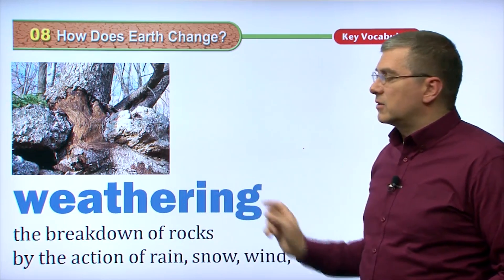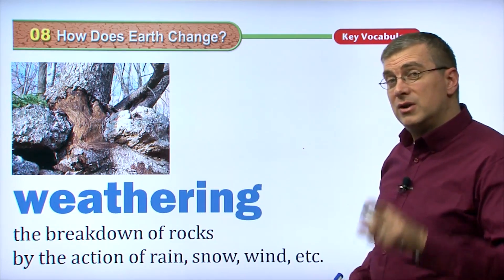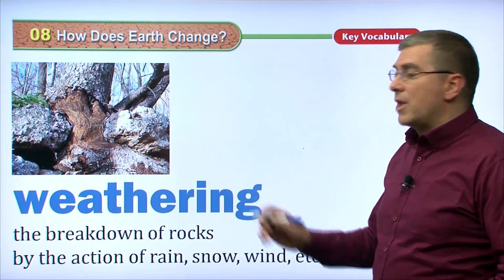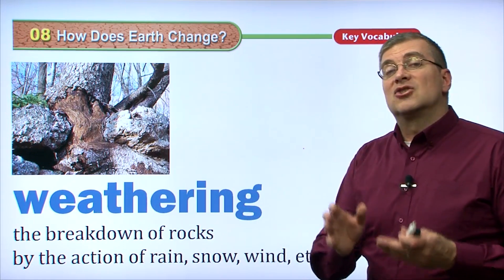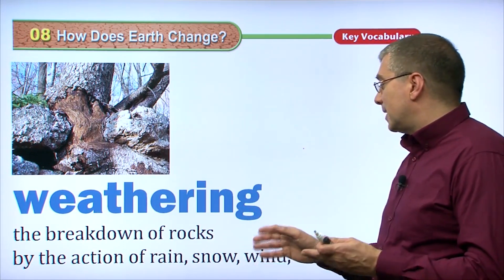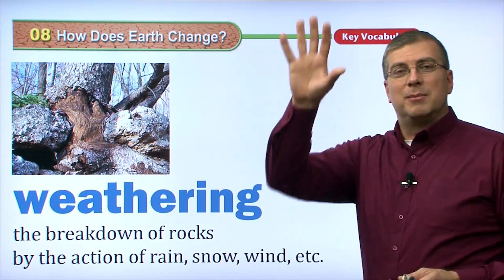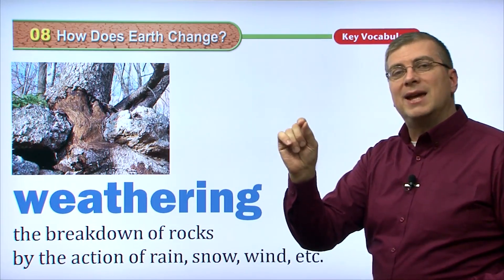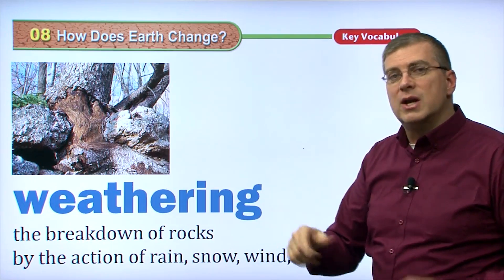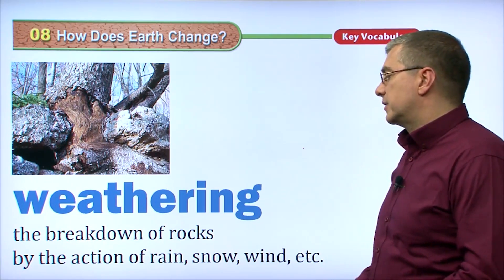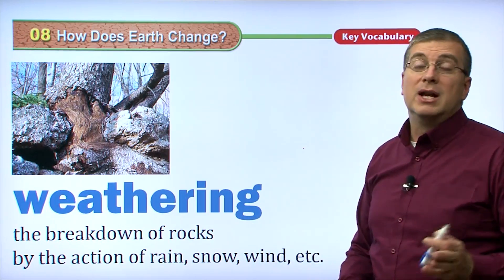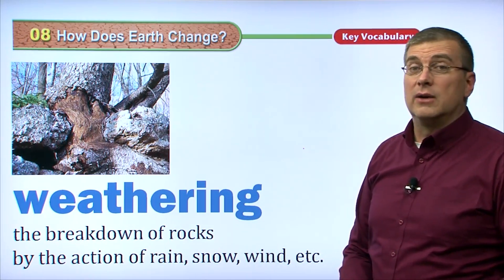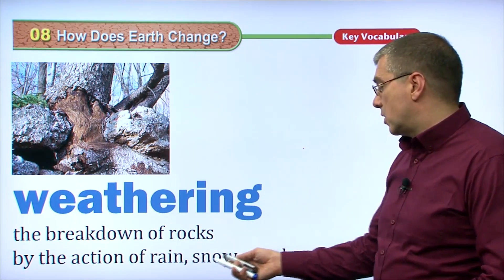By the way, weathering is also a common word used to describe what the weather does to your house. So if you talk about the weathering on your house, you're also talking about the destructive action that the weather has on your house. It might create stains on the side of your house. It might show cracks in the paint on the outside of your house. We call that weathering. So it's not just about rocks — it can be about anything that is kind of destroyed by the destructive forces of the weather through rain, snow, and wind.